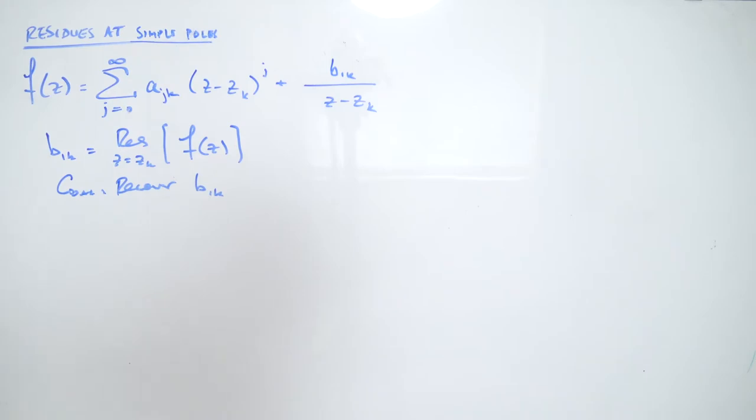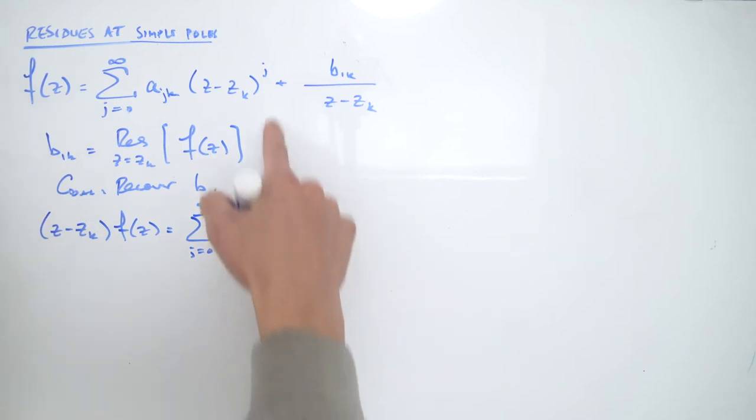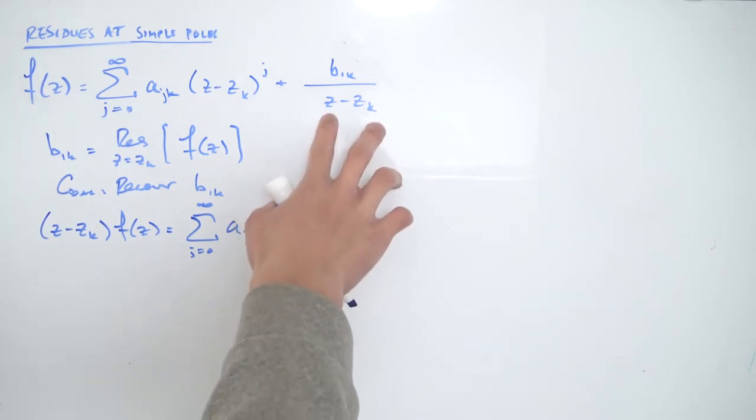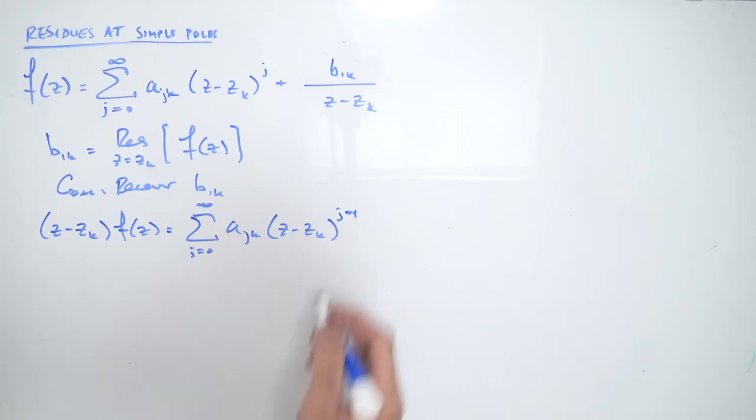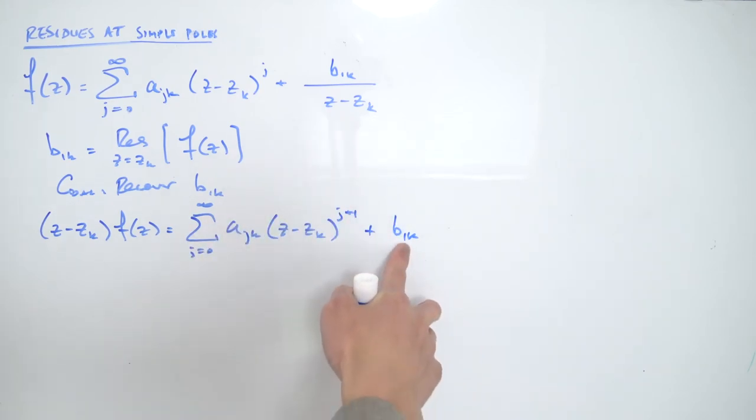And the way we're going to do that is we're just going to multiply everything through by Z minus Zk. So if we multiply this denominator everywhere, we're going to get Z minus Zk times F of Z equals the sum running from J equals zero to infinity of A sub Jk times Z minus Zk. But notice we don't only have the Jth power, we have the J plus one power, because we're multiplying this factor everywhere. And on the principal part, that just turns into B sub 1k because we got rid of this denominator.